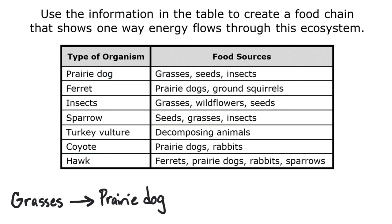Next, we need to find an organism that eats prairie dogs. Ferrets, coyotes, and hawks all consume prairie dogs, so I could pick any one of those. Since I'm making this from scratch, there's more than one correct answer, but let's pick coyotes because coyotes consume prairie dogs.